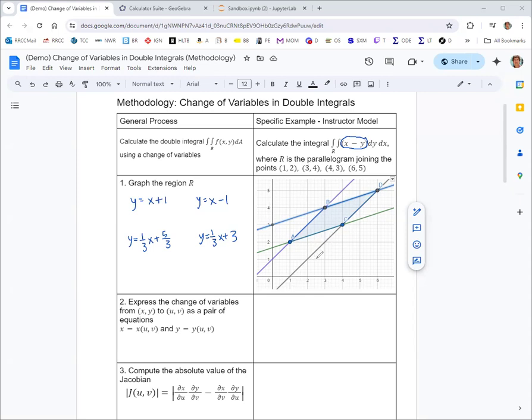The light bulb here would be to realize that you can use this x minus y. You can actually rewrite this as x minus y equals 1, x minus y equals negative 1. So that would suggest that x minus y, since it appears in all those different places, that that be one of your variables. Because then we can even see that u will go between negative 1 and 1, u will be the integrand. That would make things a lot easier.